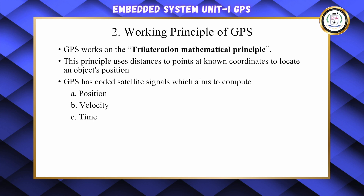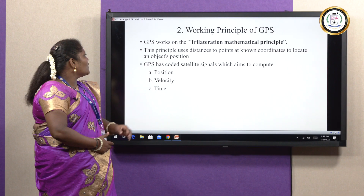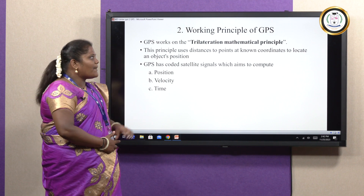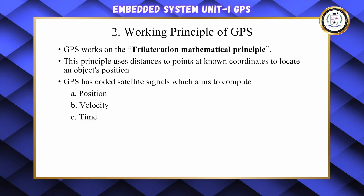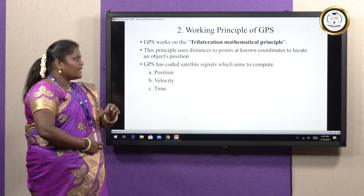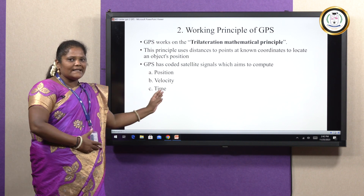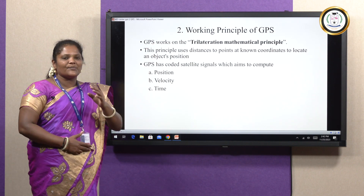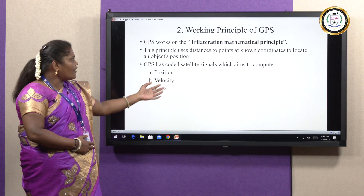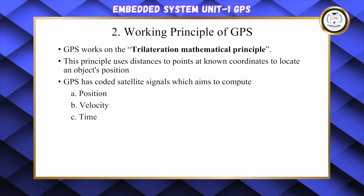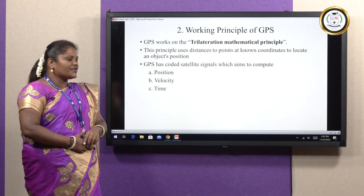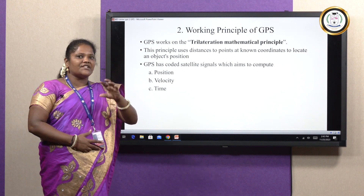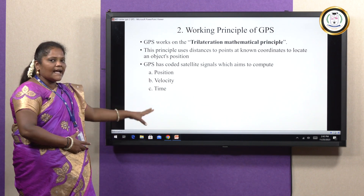The working principle of Global Positioning System: GPS works on the trilateration mathematical principle. This principle uses distance to points at known coordinates to locate an object's position. GPS has coded satellite signals which aim to compute position, velocity, and time.